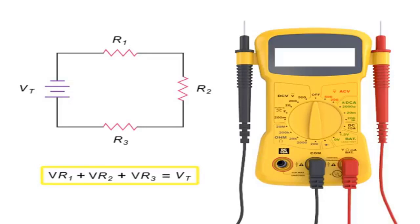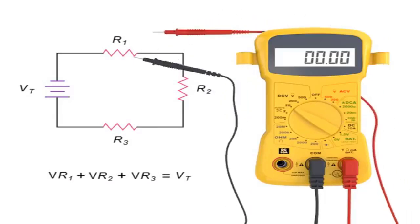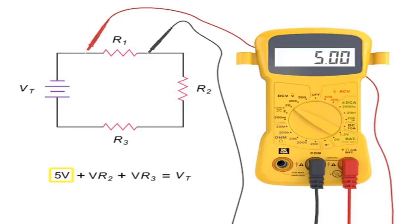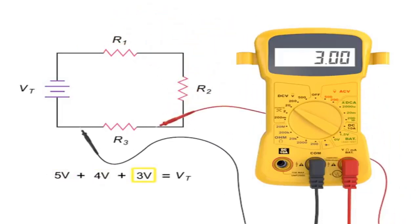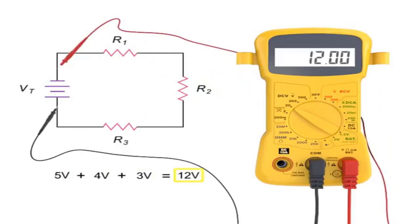By adding the voltage drop across resistors 1, 2, and 3, you can determine the total voltage applied at the source. In this case, the total voltage is 5 volts, plus 4 volts, plus 3 volts, or 12 volts total voltage.